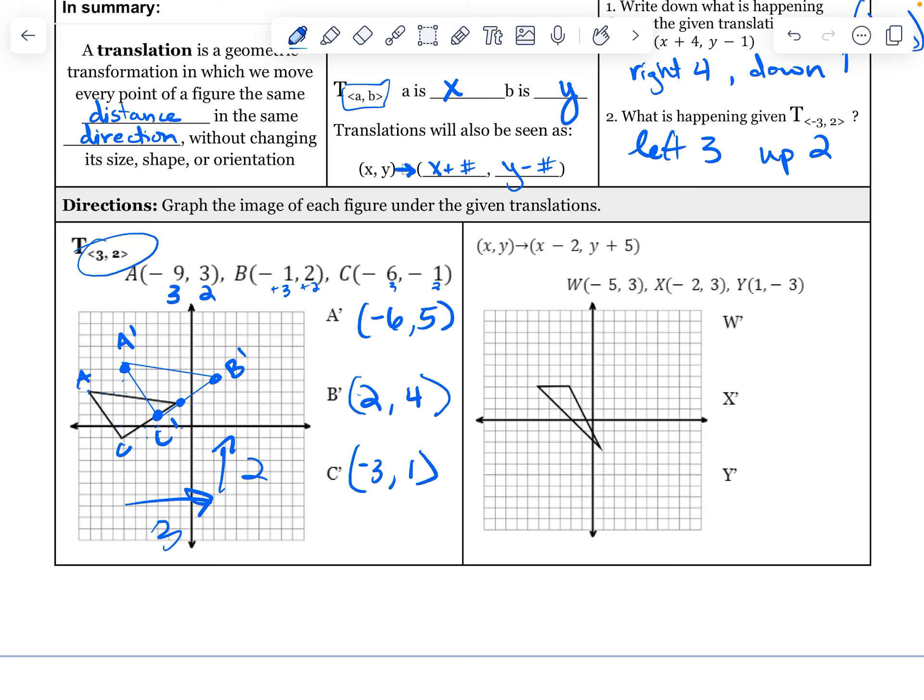Same idea. I have X, Y, Z, but I just gave it to you in a different form, so you'd see a different form. So this is going to be left 2, up 5. So minus 2, up 5. So negative 5, 3 is W. So left 1, 2, up 1, 2, 3, 4, 5. W prime is going to be negative 7, 8. Down 2, up 5. So negative 2, 3 is right here. That's the X. Left 2, up 1, 2, 3, 4, 5. There's my X prime at negative 4, 8.